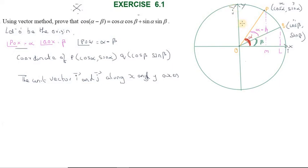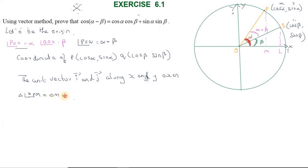Now, the vector OP equals OM plus MP. That is, the OP vector equals the OM vector plus the MP vector.